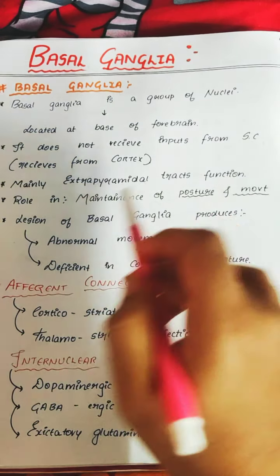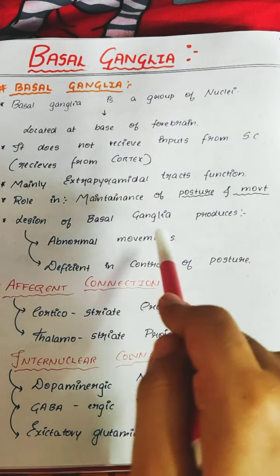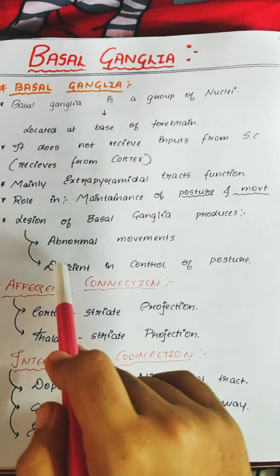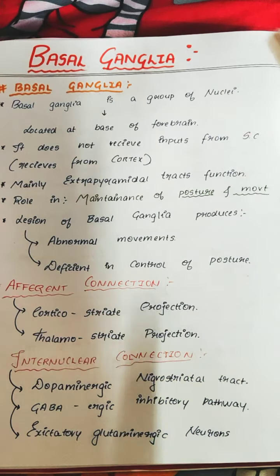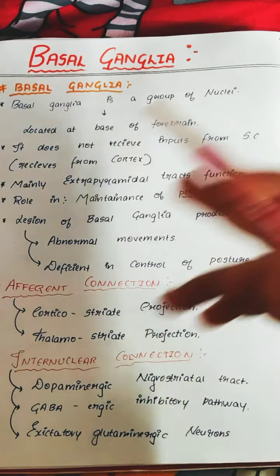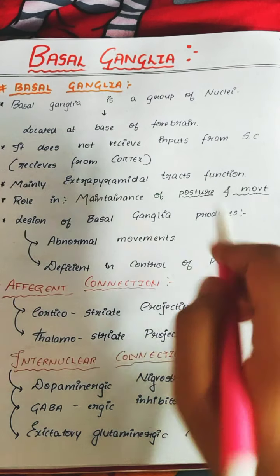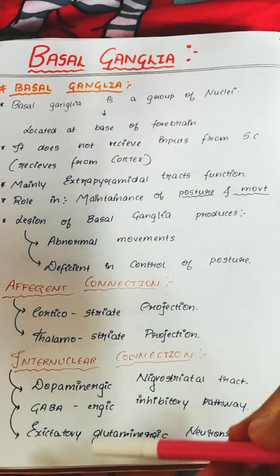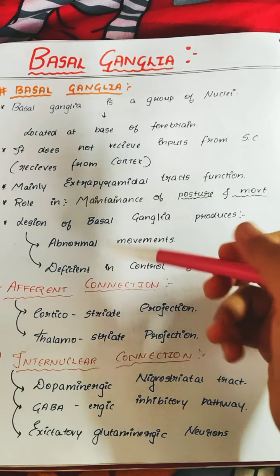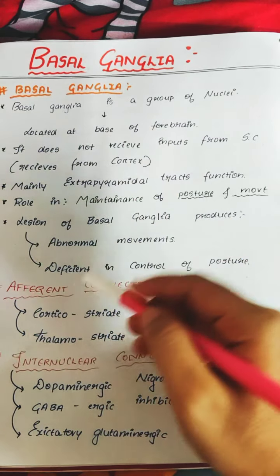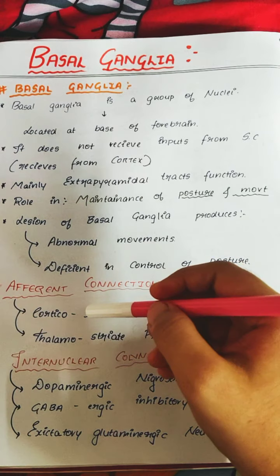If there is any lesion in the basal ganglia, you can see abnormal movements and deficient control of posture — you will lose equilibrium, unable to stand or sit properly, walking with an abnormal gait. The basal ganglia has two types of connections: efferent connections and internuclear connections. Internuclear connections refer to connections found between two nuclei.